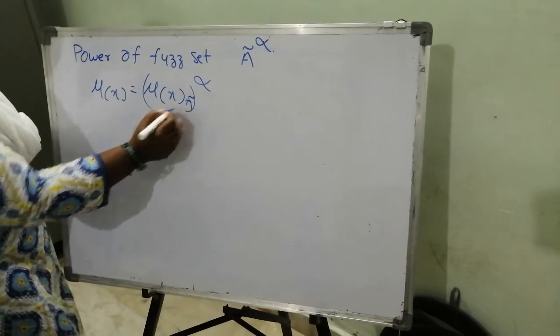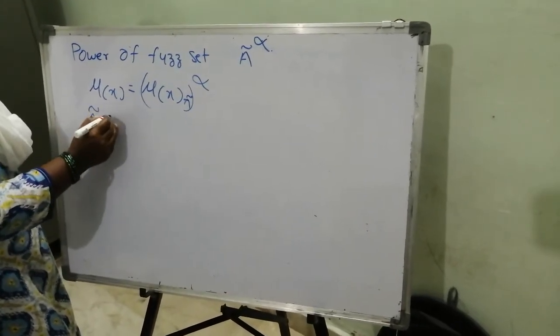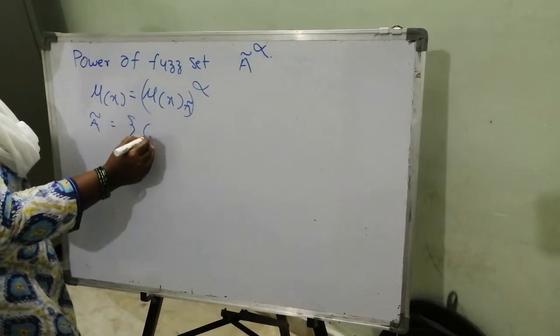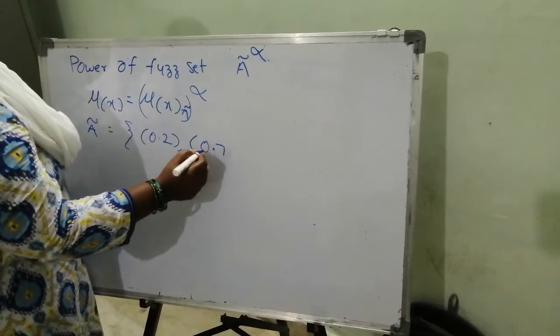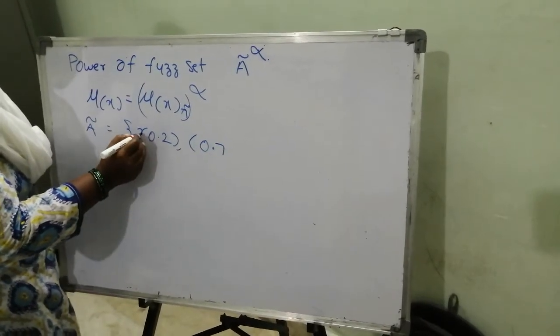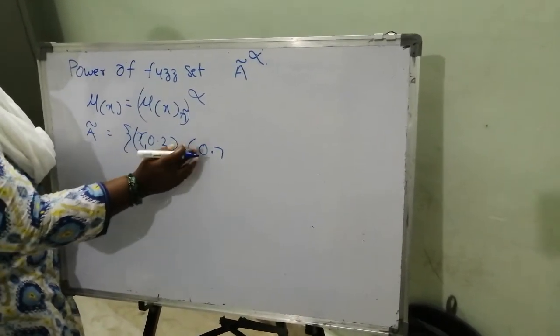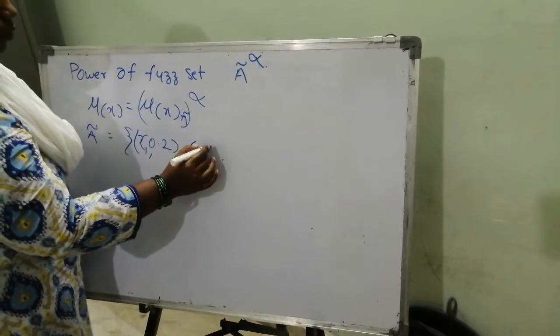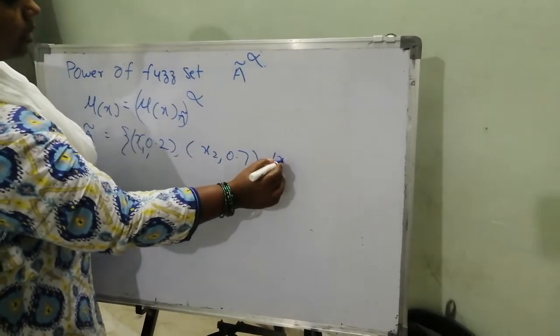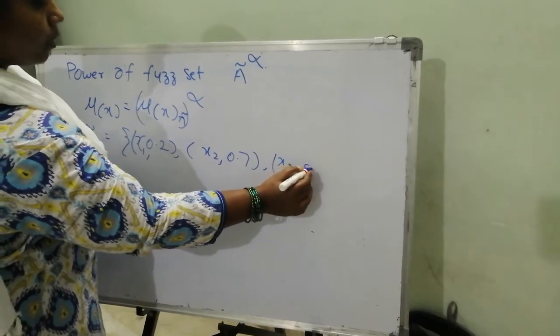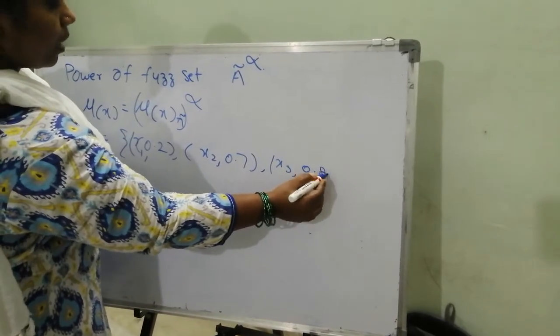fuzzy set A equals 0.2, 0.7. So x1, 0.2, x2, 0.7, x3, 0.8.